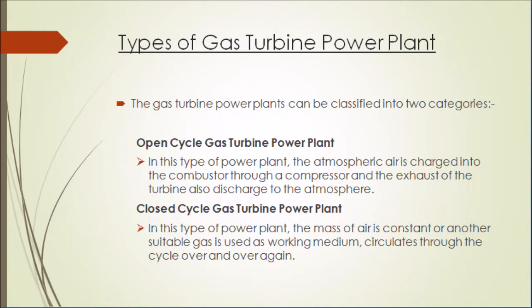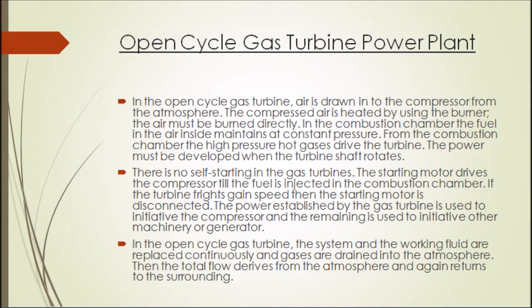So basically, there are two types of gas turbine power plant. One is the open cycle gas turbine power plant, and another one is the closed cycle. In the open cycle gas turbine, air is drawn into the compressor from the atmosphere. To compress air, it is heated by using the burner. The air must be burned directly. In the combustion chamber, the fuel and air inside maintain a constant pressure. From the combustion chamber, high-pressure hot gases drive the turbine. The power must be distributed when the turbine shaft rotates. There is no self-starting in the gas turbine — the starting motor drives the compressor until the fuel is injected in the combustion chamber.